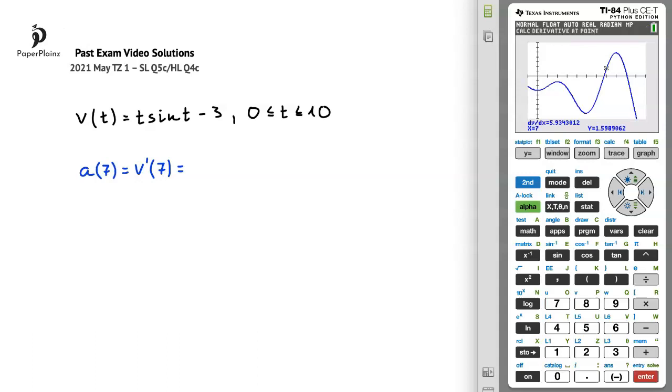We can see on the screen that the value of the derivative, so the acceleration, is 5.9343012, which we will round to 3 significant figures. The third significant figure here is 3, and the fourth significant figure is 4, and since 4 is less than 5, we'll keep the 3 as it is, so the acceleration is 5.93 meters per second squared.